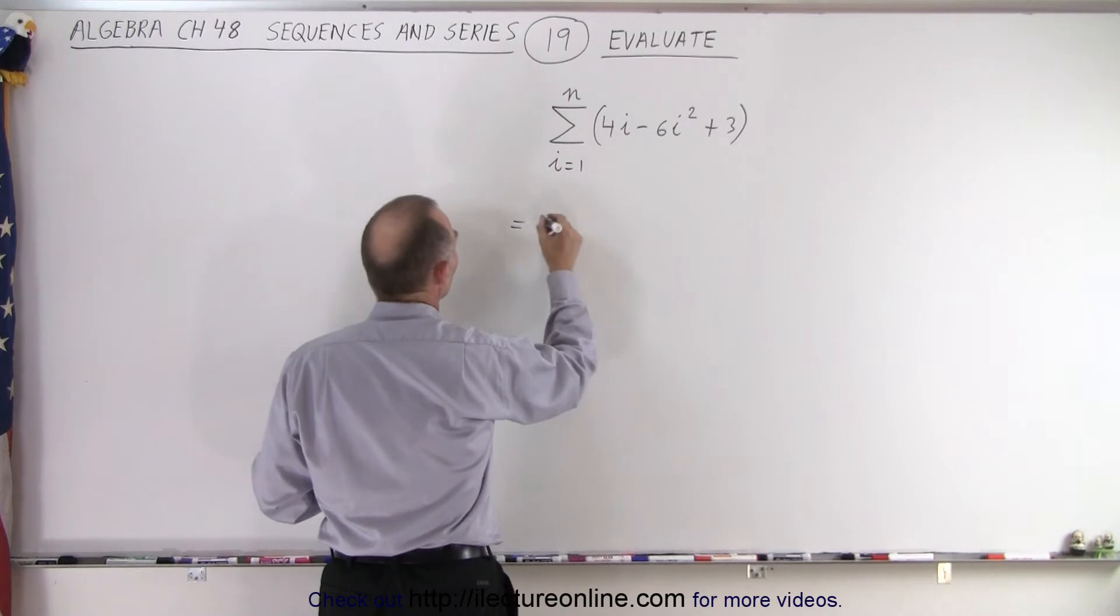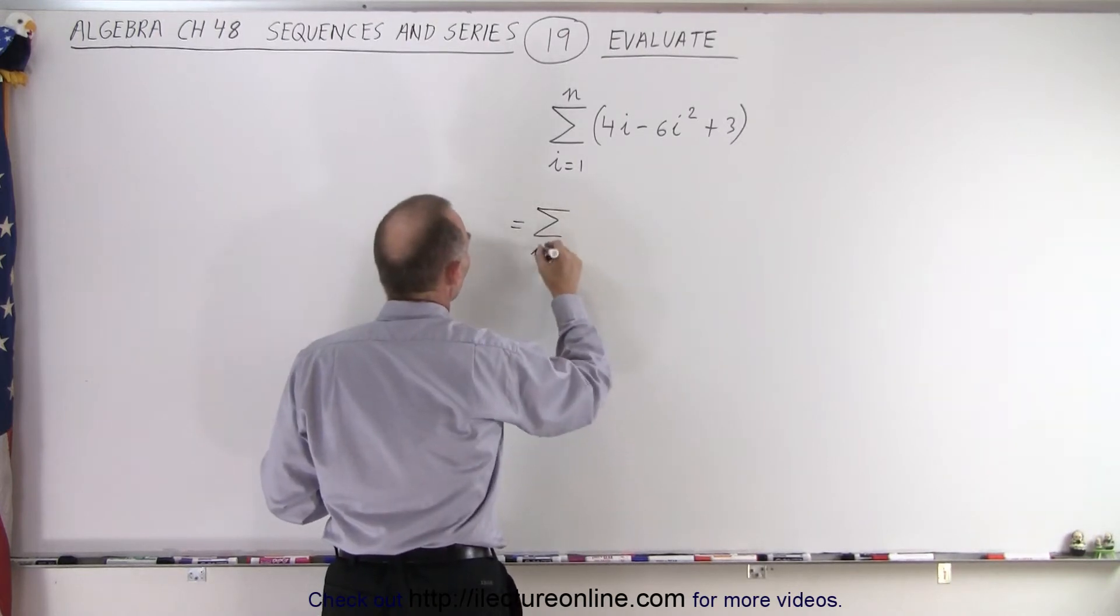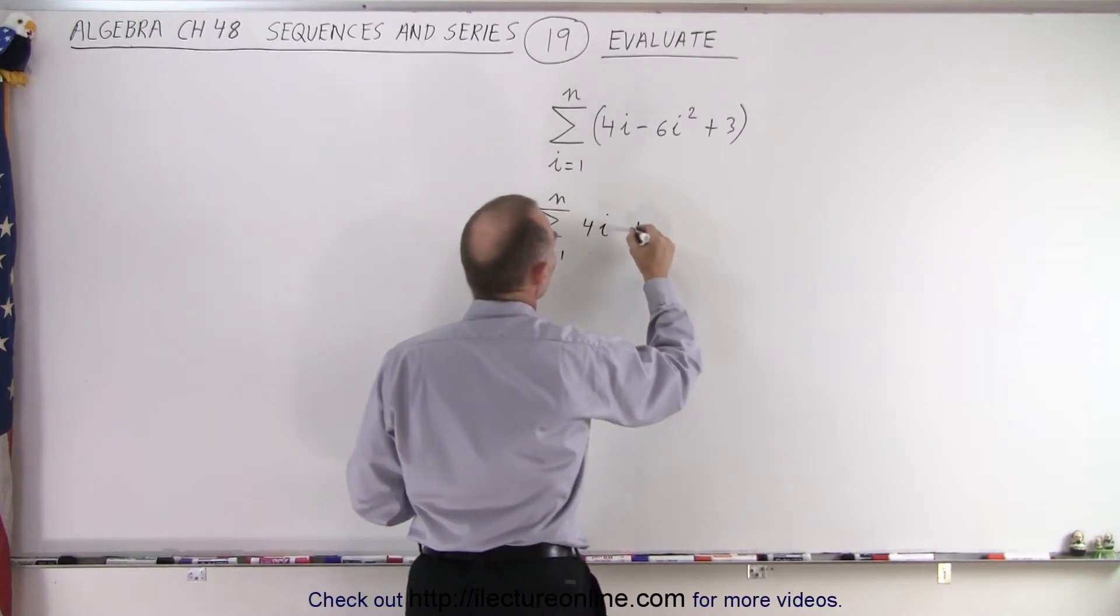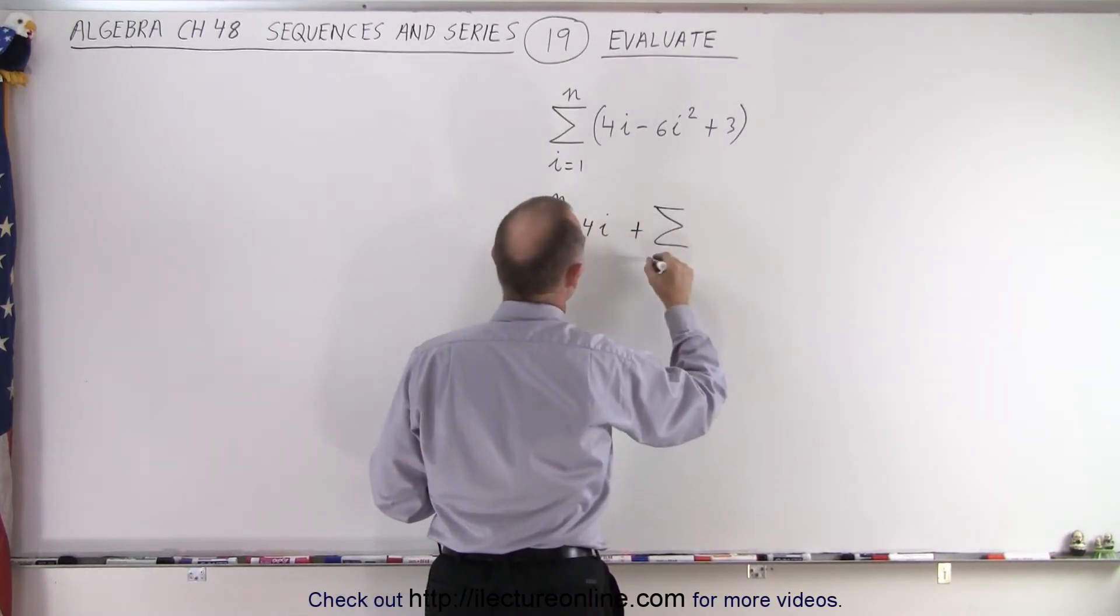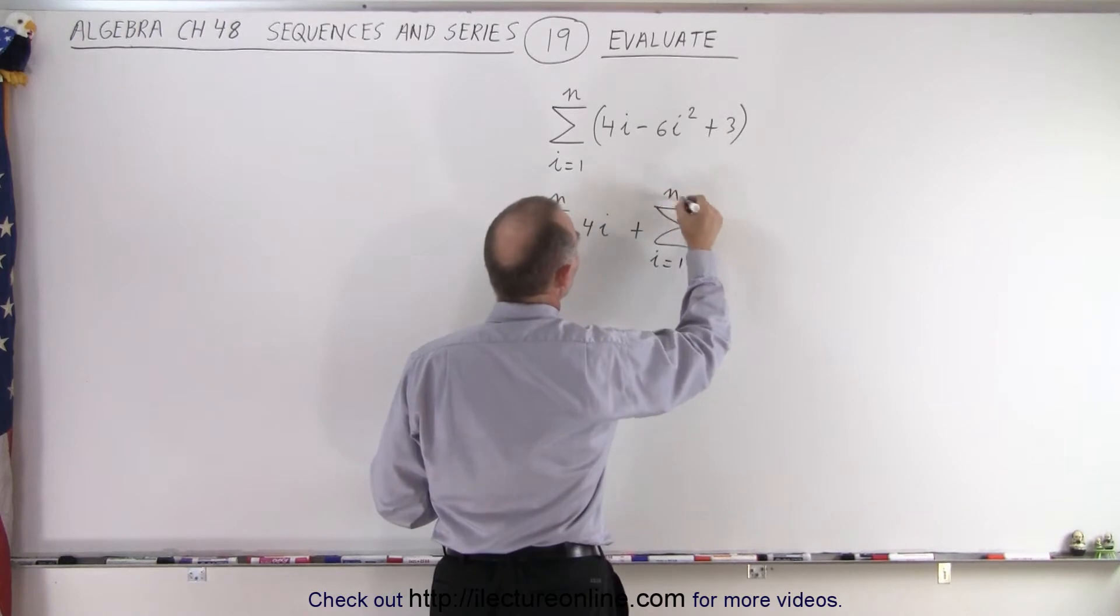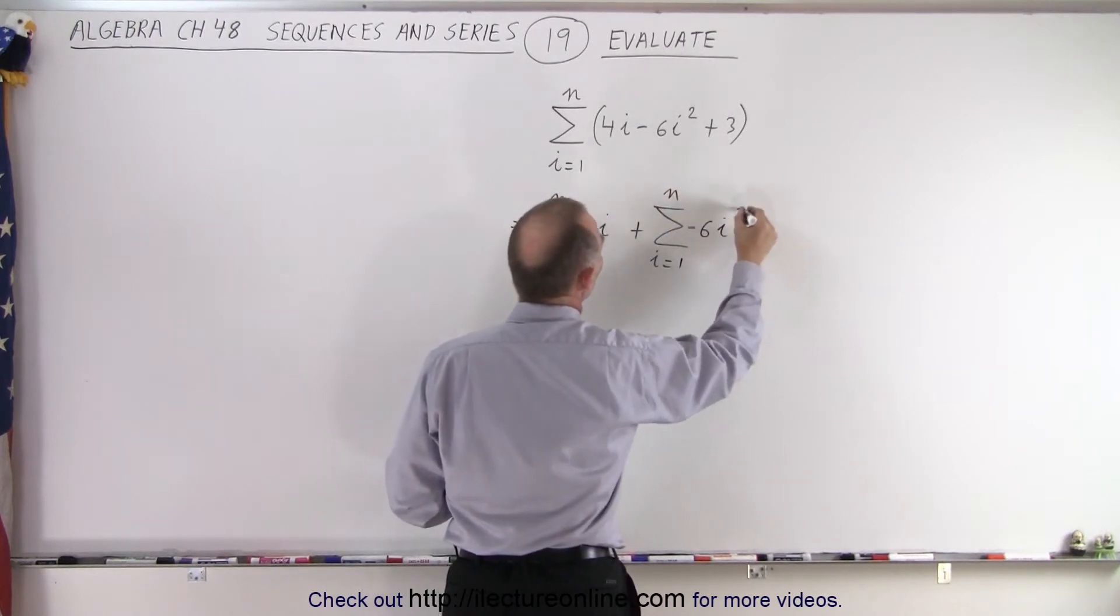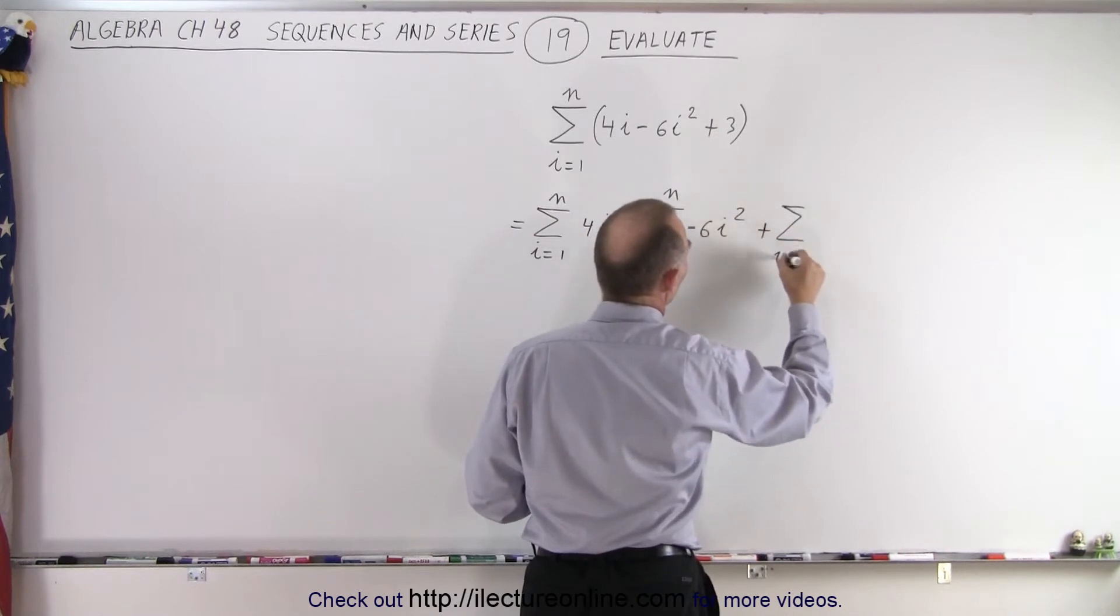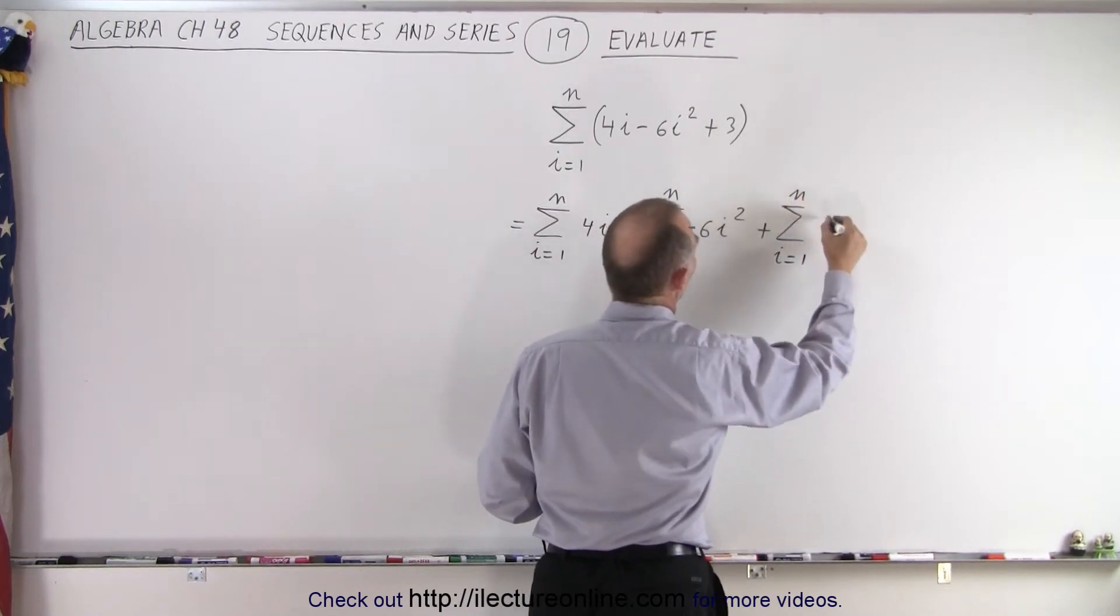So this can be written as the sum when i goes from 1 to n of 4i, plus the sum from i equals 1 to n of 6i squared, and plus the sum from i equals 1 to n of the number 3.